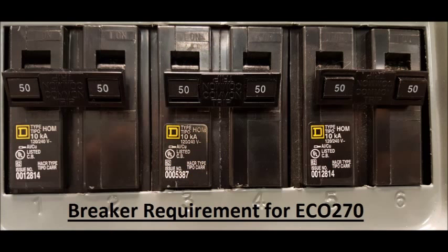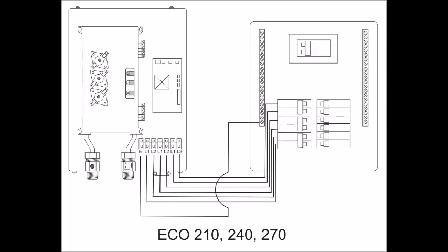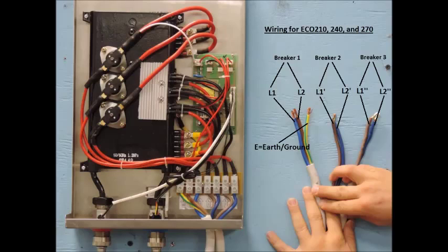Lastly, our eco-270 unit runs on three 220V double pole 50A breakers, meaning the unit has access to 150A. This unit will wire up the same as the eco-210 and 240, only it will be using a breaker with a higher amp limit.